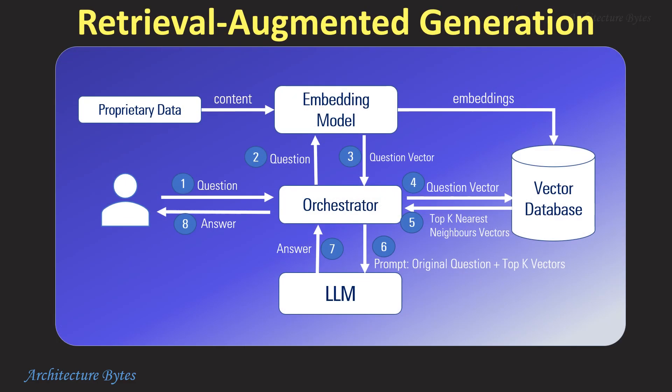In conclusion, Retrieval Augmented Generation uses this two-step process to generate responses that span a larger context window than traditional large language models. Where could you use this? Imagine using this within your enterprise to answer queries from your enterprise data.